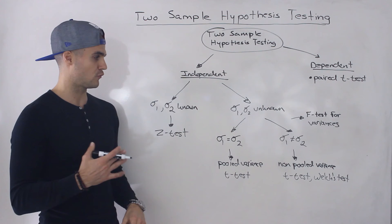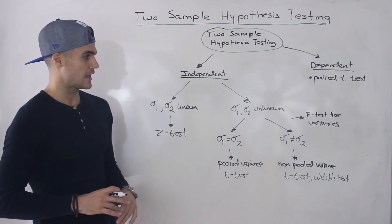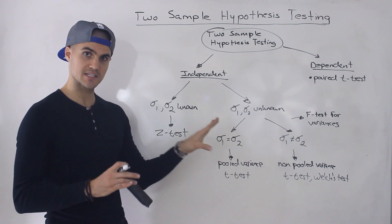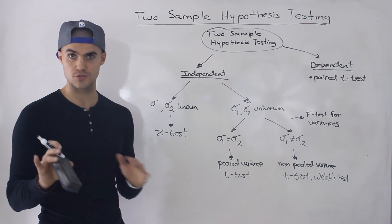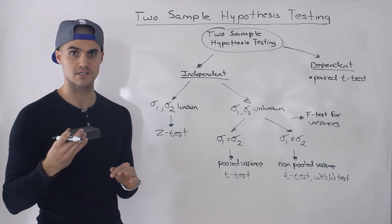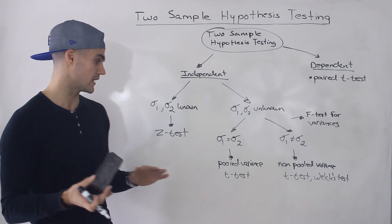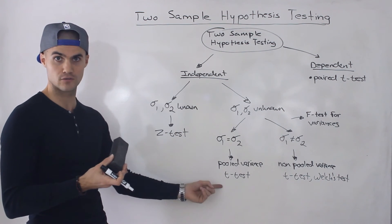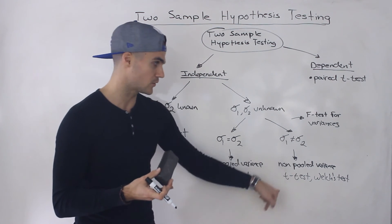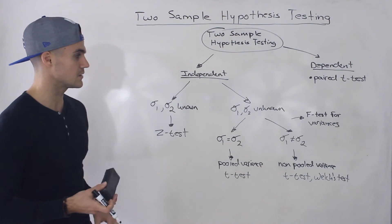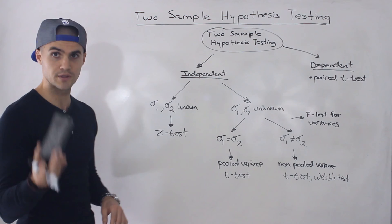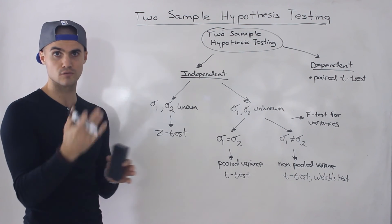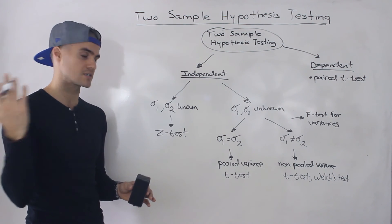A couple of points before finishing: all of these tests could be split into one-tailed versus two-tailed tests, just like one-sample hypothesis testing. I could have made this diagram even more complex by splitting each branch into one-tailed and two-tailed, but I'm keeping it simple. Just be aware that you need to watch out for whether you're doing a one-tailed or two-tailed test — that's why those fundamentals from one-sample hypothesis testing are important.